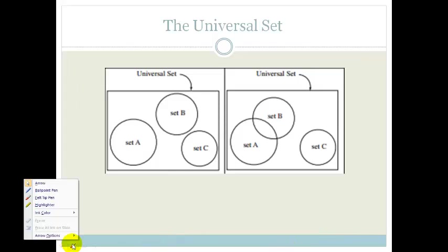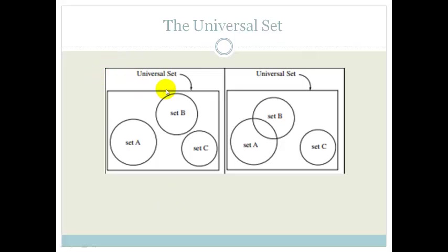The universal set is everything that can possibly be included in the Venn Diagrams. The universal set is everything. And then you could have sets inside the universal set, which could either be intersecting, or they could not. They could be separate things. So, for example, this could be all the colors, all the colors of the rainbow. But this could be only the reds.